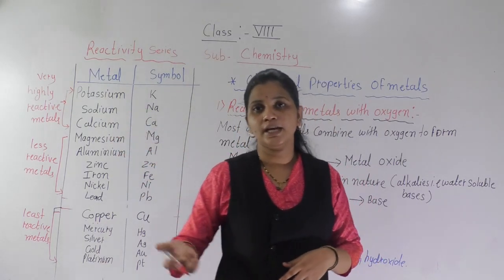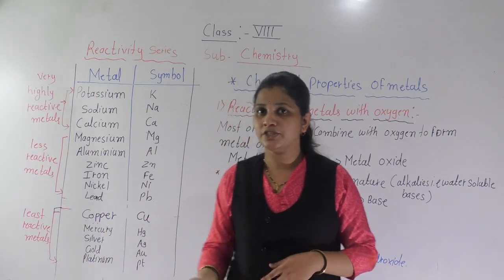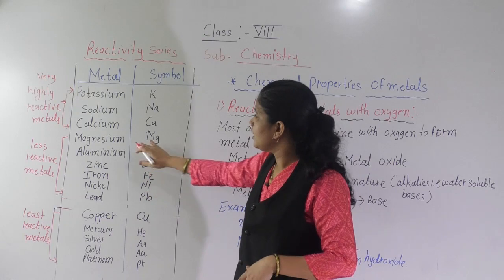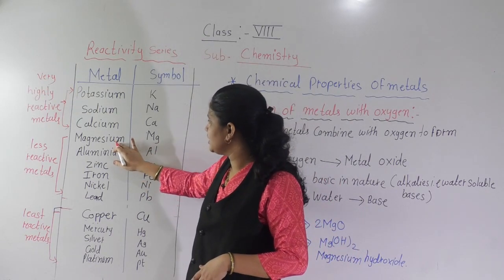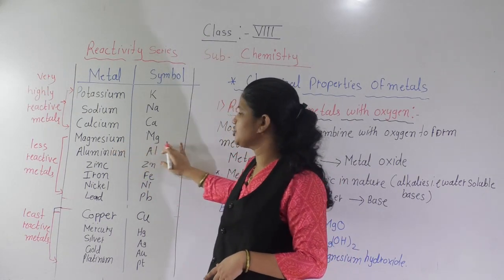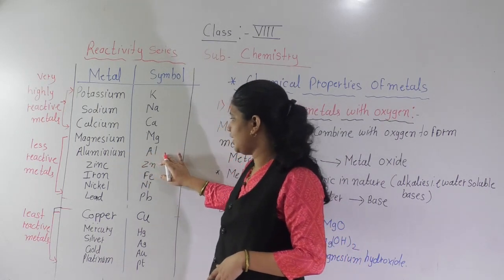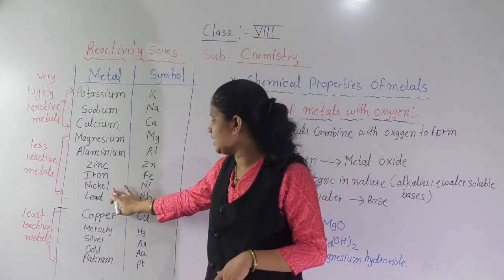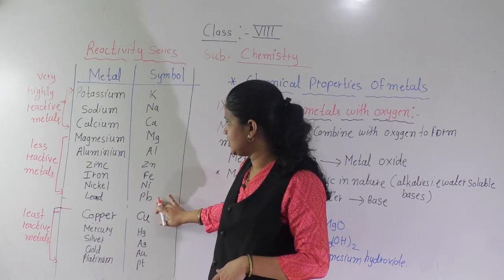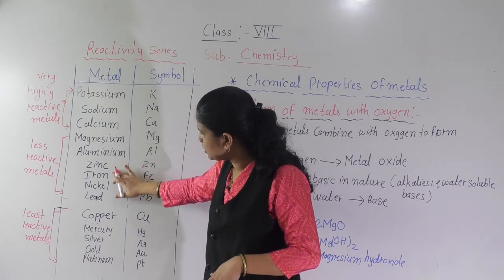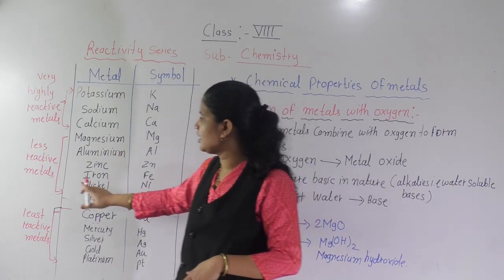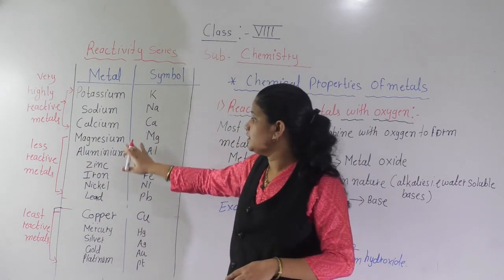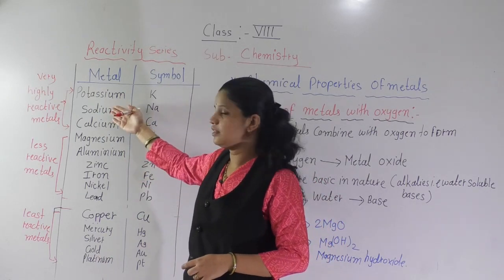There is one more reaction — the displacement reaction — where this reactivity series is important. Now, then magnesium, aluminium. Magnesium symbol is Mg, aluminium is Al, zinc is Zn, iron is Fe, nickel is Ni, and lead is Pb. These 6 metals are less reactive metals. They are reactive, but less reactive than potassium, sodium, and calcium. These you can keep in open space because they are not highly reactive like potassium, sodium, and calcium.